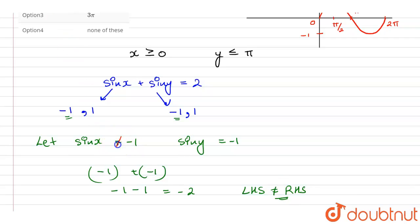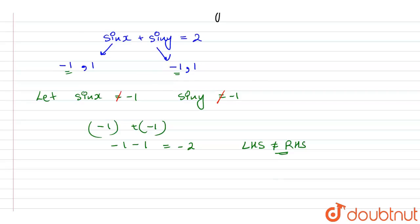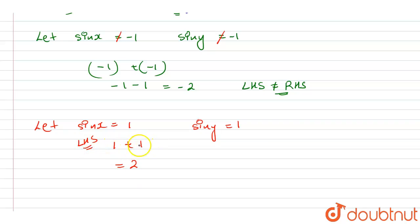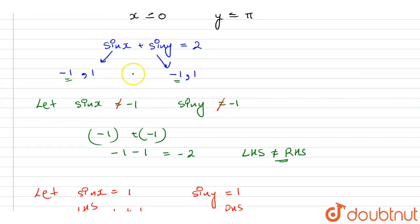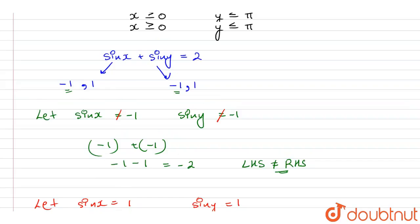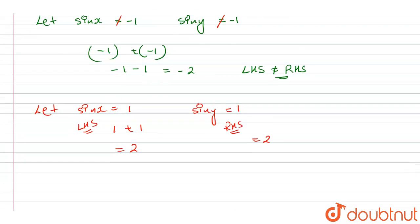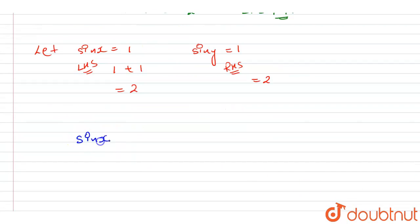So the values of sin x and sin y cannot be equal to minus 1. Now let us suppose the value of sin x equals 1 and the value of sin y also equals 1. This will be 1 plus 1, which equals 2 — the value of LHS equals the value of RHS, which is also 2. That means the value of sin x and sin y in this question must both equal 1.